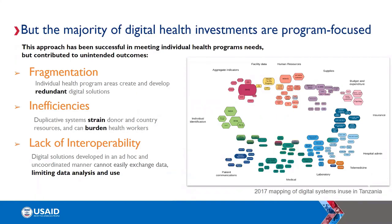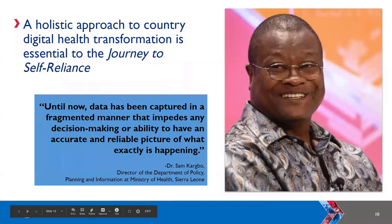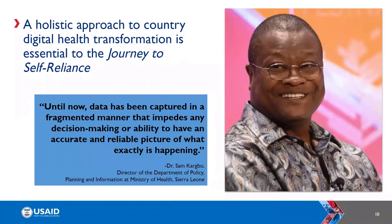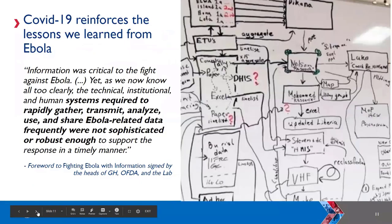This lack of interoperability — when individual digital systems have been invested in for single-point solutions without a broader systems lens — frequently makes it really hard to exchange data between systems. That is a big challenge for routine health service delivery and in particular in the context of disease outbreaks like Ebola or COVID where you need to rapidly exchange data between different digital systems. An example from Dr. Sam Cargabo in the Ministry of Health in Sierra Leone illustrates how data has been captured in a fragmented manner that impedes decision-making and an accurate picture of what's happening. There is a drawing by Hans Rosling representing the various digital data systems collecting data needed to inform the Ebola response in West Africa and how difficult it was to exchange data between these systems.